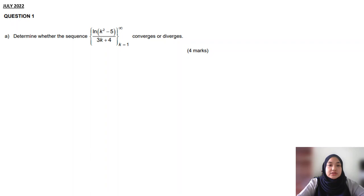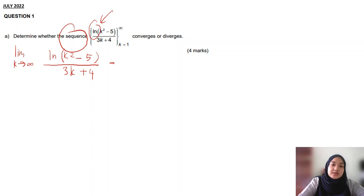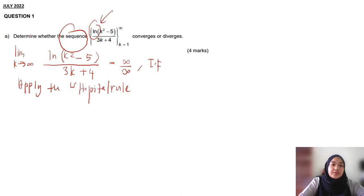This was an example of a polynomial where we did not use L'Hôpital — we used divide by the highest power of the denominator. One more question for sequence: determine whether the sequence converges or diverges. You can see we have a ln here. When you have ln or exponential, normally we use L'Hôpital rule. For polynomial, we use divide by highest power. Write limit k approaching to infinity of ln(k² − 5) over (3x + 4) and apply L'Hôpital.